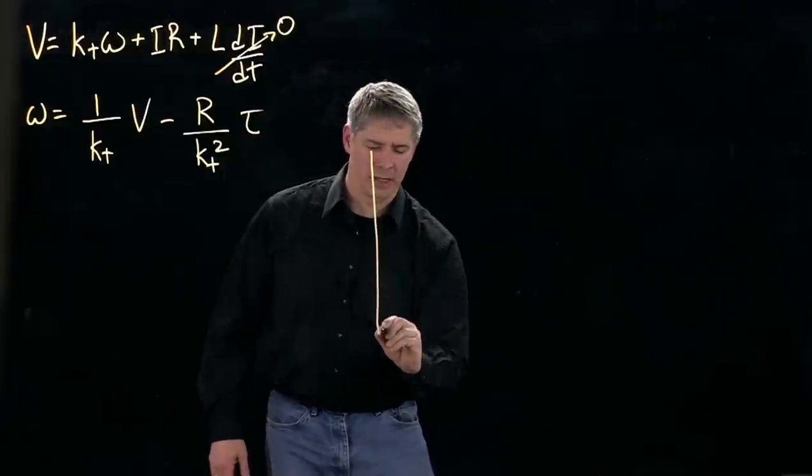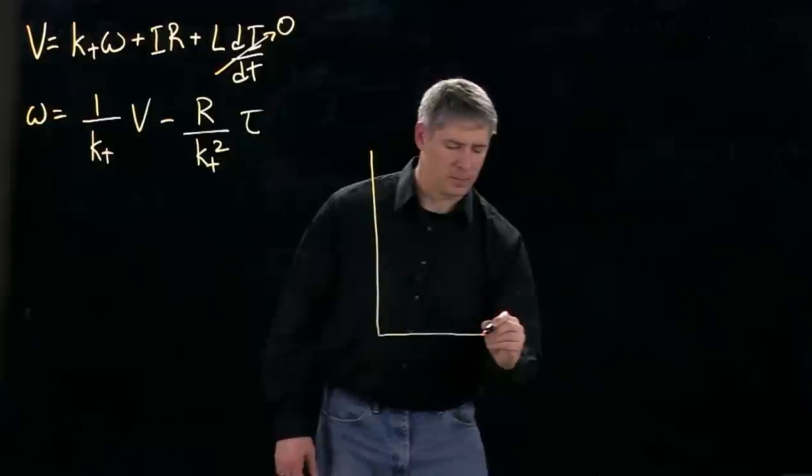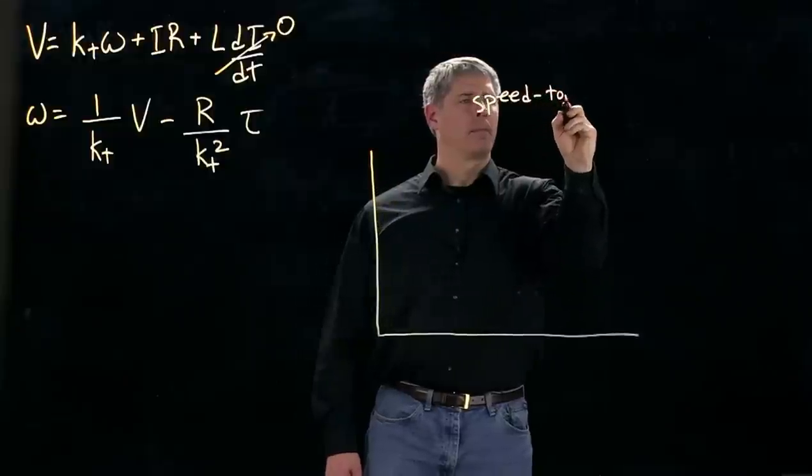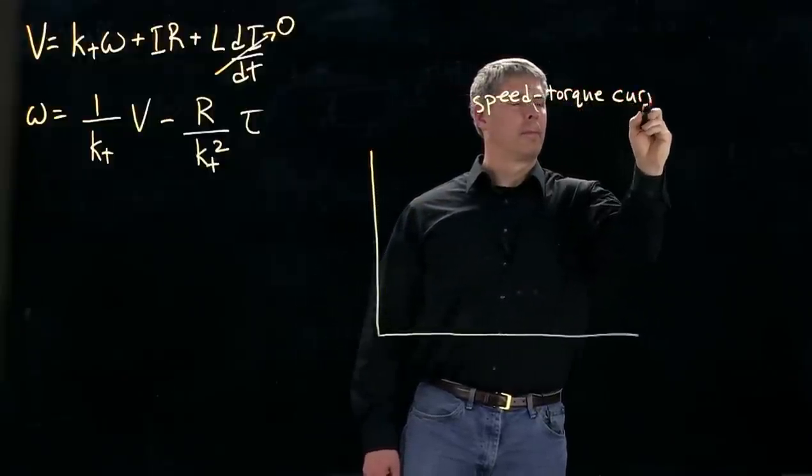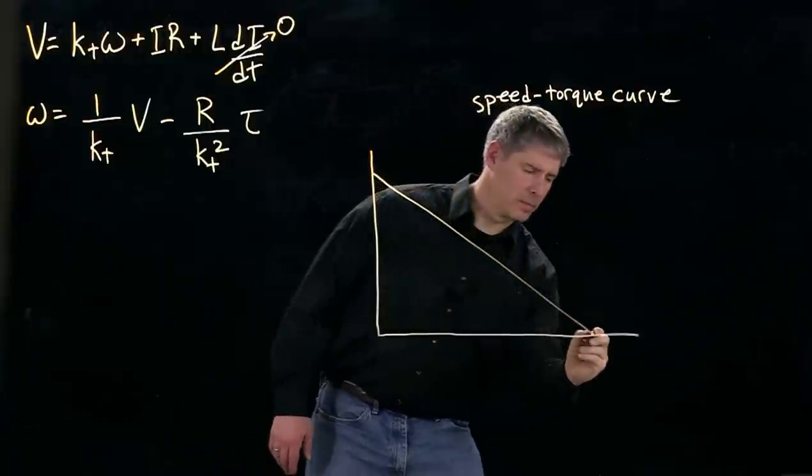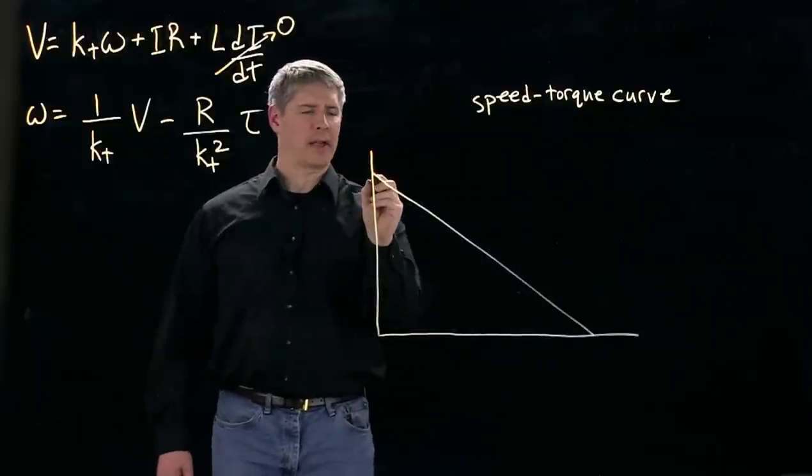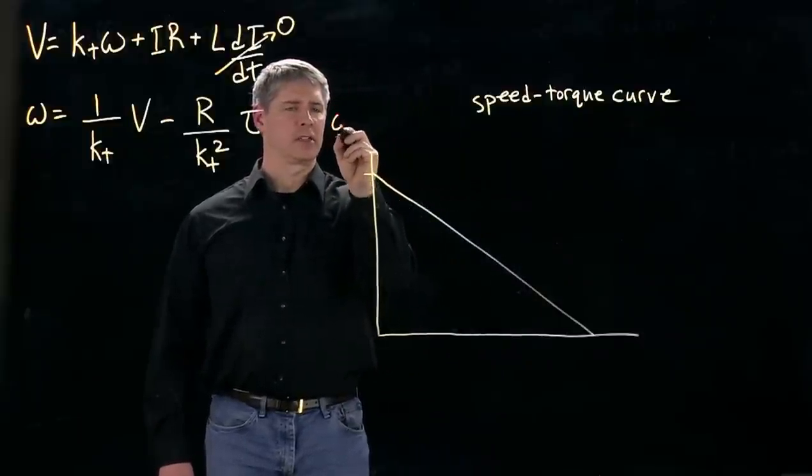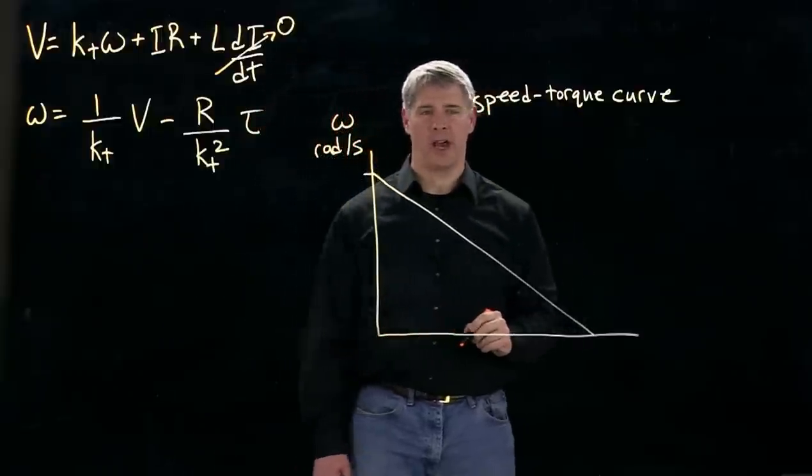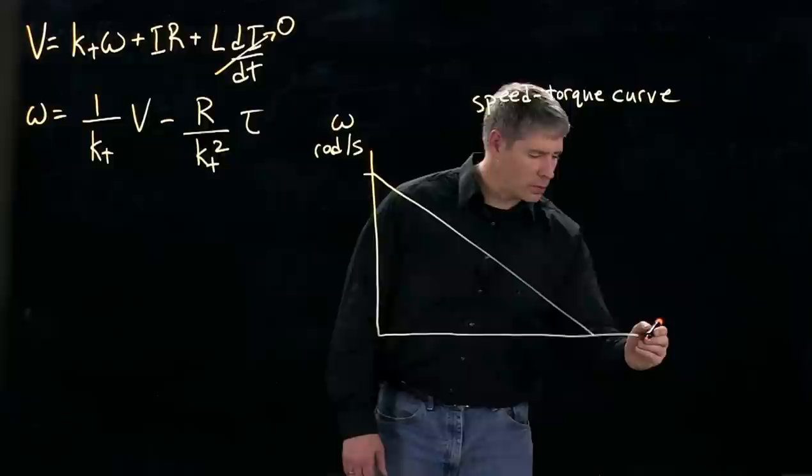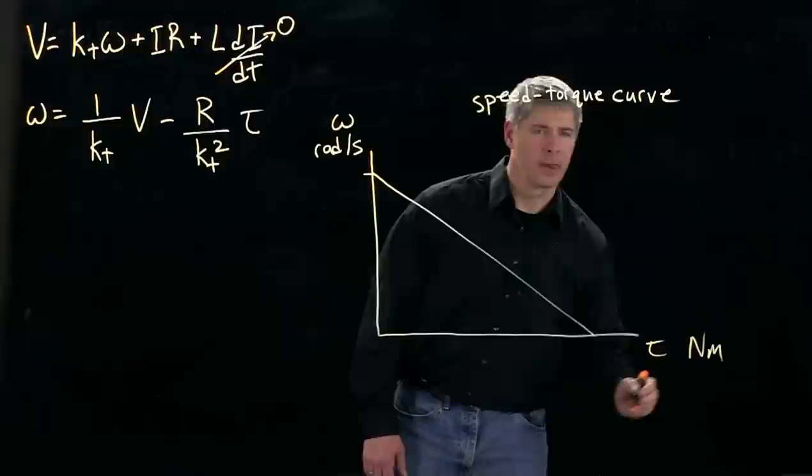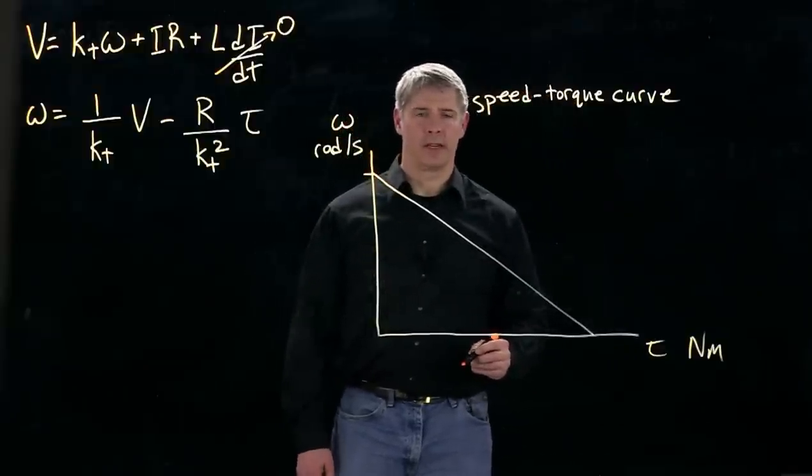So we can draw that as what's known as the speed-torque curve. And it looks like this, where this is the speed axis, and I'll use SI units, so the angular velocity of the motor shaft is in radians per second. And this is the torque axis, and the units are Newton meters in SI units.